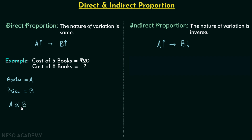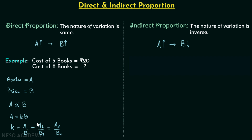We have A proportional to B. When we remove the proportionality sign, we multiply by a constant K, giving us A = K × B, so K = A divided by B. This constant K remains the same for different values of books and prices. So we can say a1 over b1 equals a2 over b2, which is the same constant.